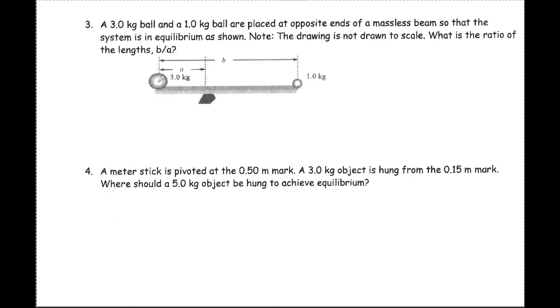These are at equilibrium, so we have torque from this weight and torque from this ball. Torque equals F times R for both. The torque of the 3 kilogram ball equals the torque of the 1 kilogram ball. The force is Mg, so using G equals 10 meters per second squared, the weight is 30 newtons times A.